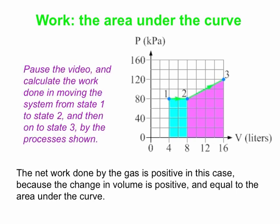This might be a good time to hit the pause button on the video and calculate the work done in this particular case. Again, it's just the area under the curve. First, do it for the one to two process. Then try it for the two to three process. Then we'll add them up to get the net work. On the next screen, I will go through that calculation. Feel free to pause and work it out for yourself so you can check your answer.